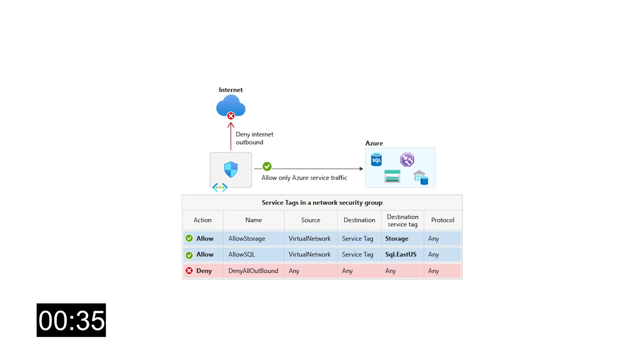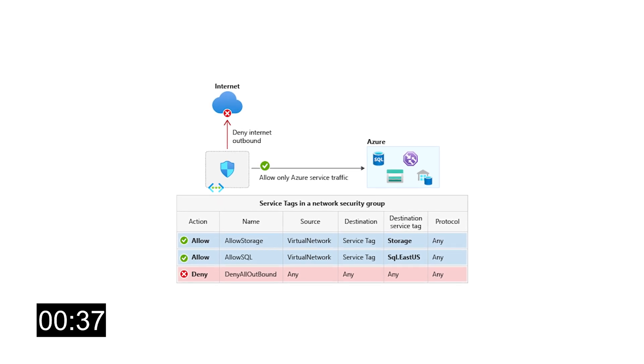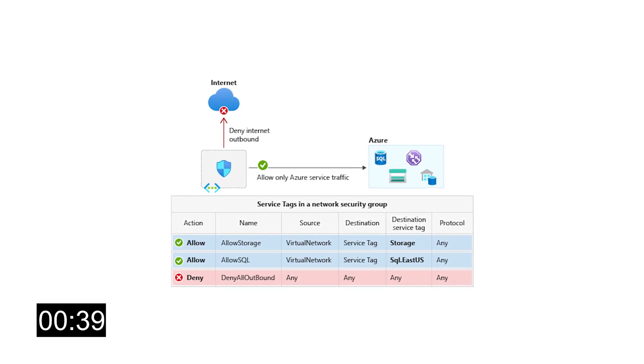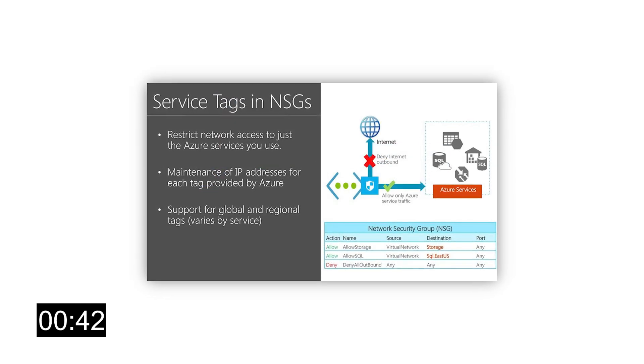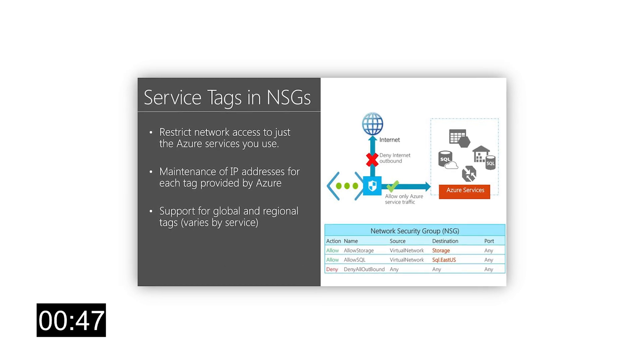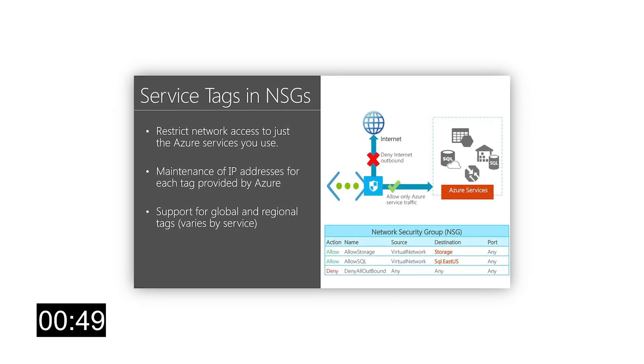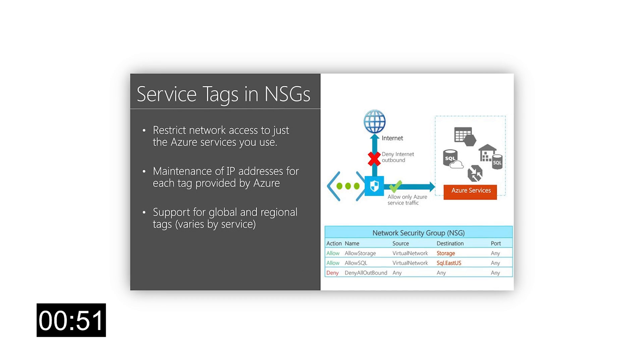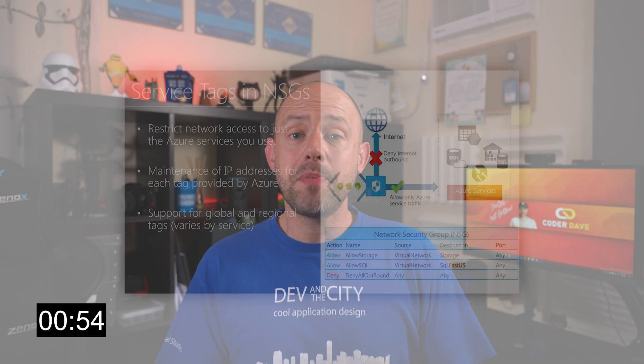But how do service tags help? Service tags are a convenient way for users to manage their networking configuration to allow traffic from specific Azure services. A service tag basically represents a group of IP address prefixes from a given Azure service. Using service tags, you can define network access control on network security groups, Azure Firewall, or even on-prem firewalls. By specifying the service tag name in the appropriate source or destination field of a rule, you can allow or deny traffic to or from that specific service without worrying about its IP addresses.